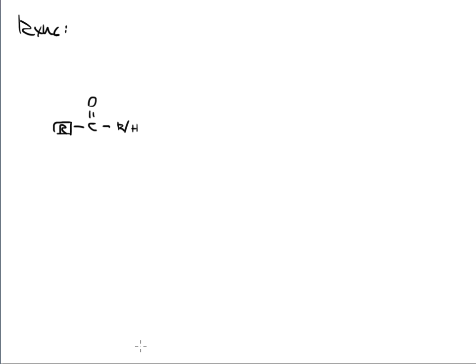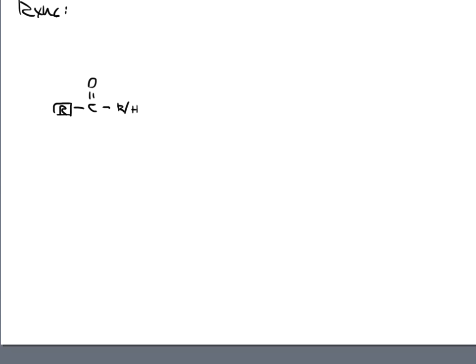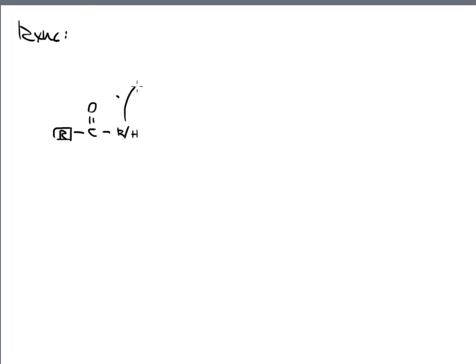Welcome back to this video. In the last one, we talked about type 2 reaction schemes and introduced a little bit about the mechanism. What you see on the screen right now is a carbon double bond oxygen — that's the carbonyl bond — and to the left is a random alkyl group. It could be a straight chain, a ring, or anything. To the right, we're seeing another carbon-containing group or a hydrogen. This is the only way we can get an aldehyde or a ketone, the only two functional groups in type 2.